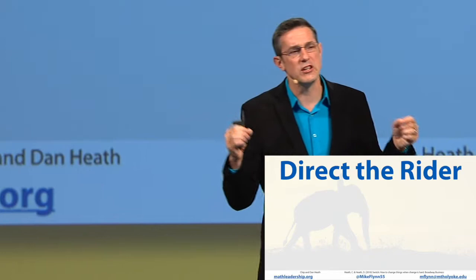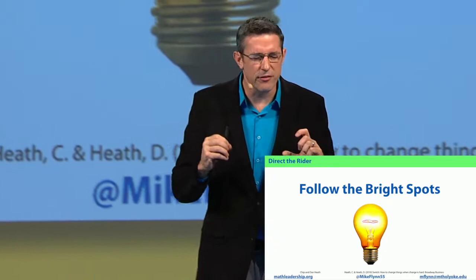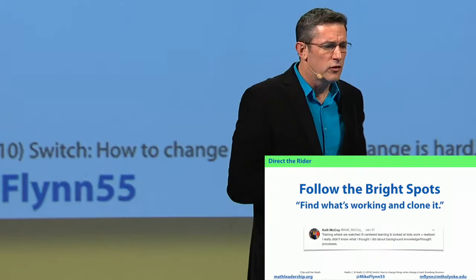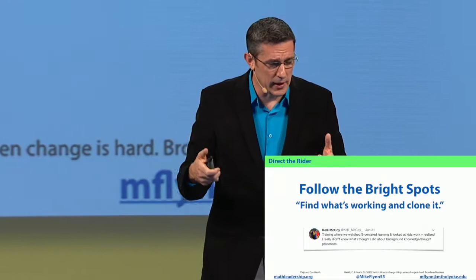Let's begin with directing the rider. What if your teacher has rider issues — they need help up here in their rational thinking? One suggestion is to find the bright spots, defined in two ways. One: find what's working and clone it. If you see places in the school where the change is happening really well, find out what's causing that change and replicate it.